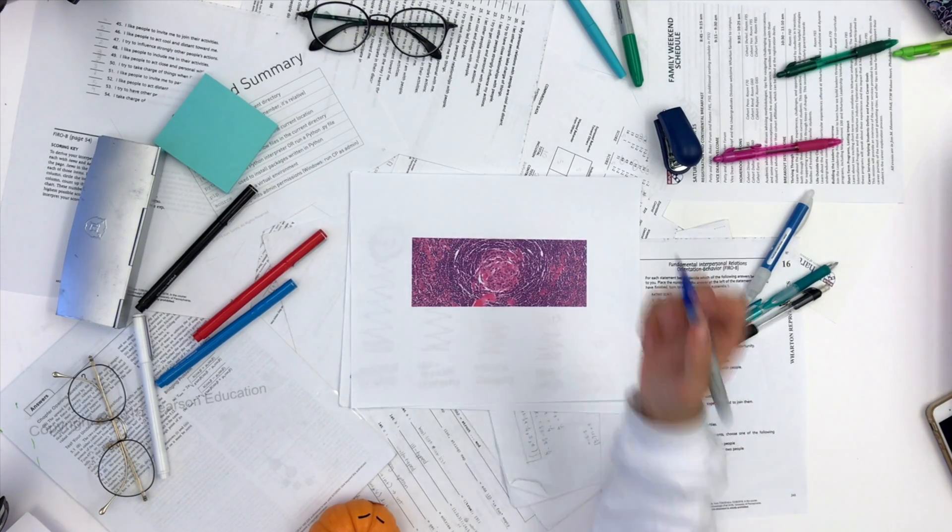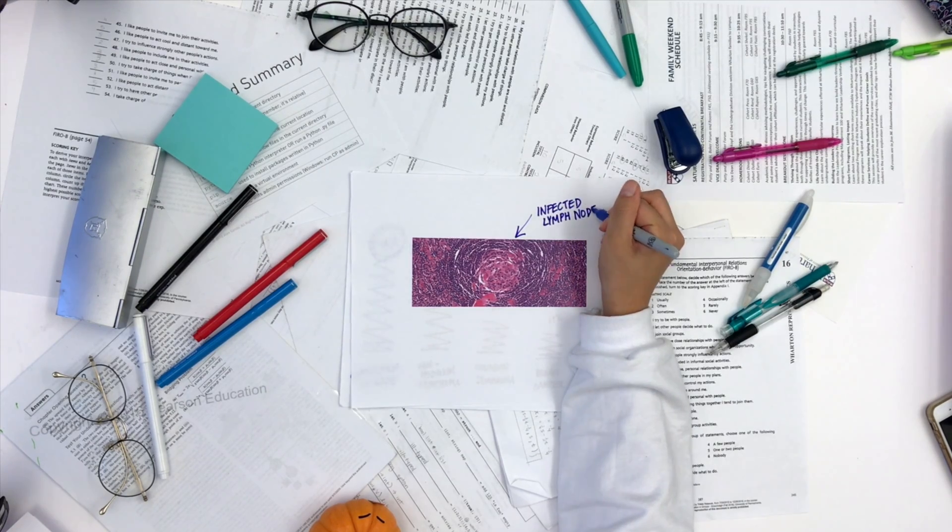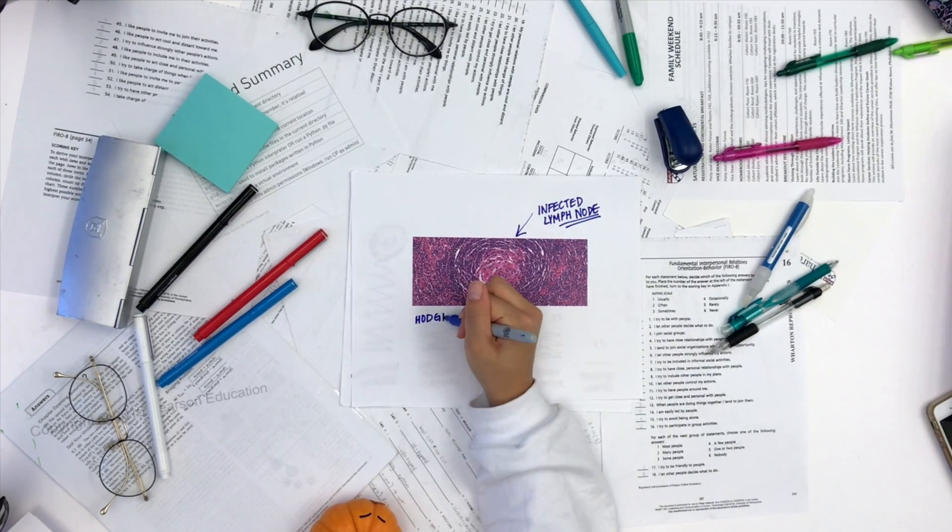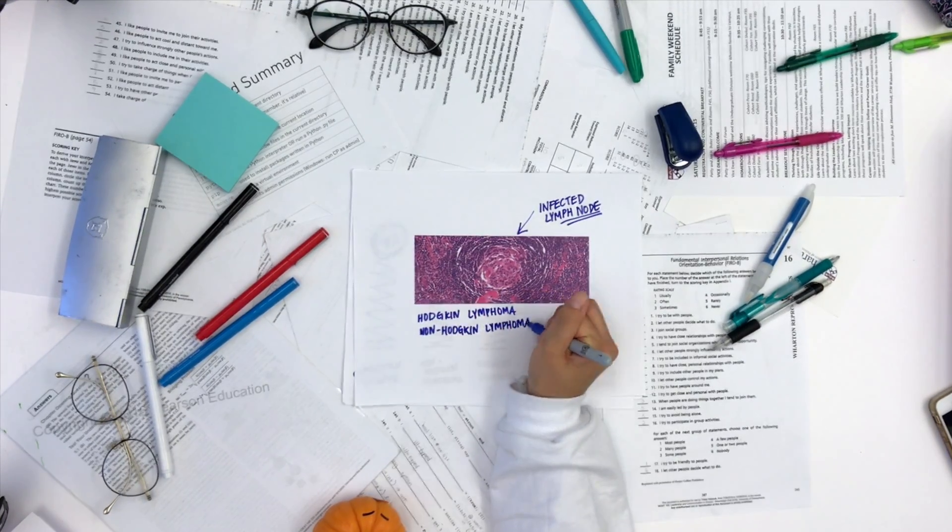Here is a Castleman disease lymph node. Most doctors will look at this lymph node and come up with a few ideas of what this patient has. Lymph nodes like this one are often diagnosed as Hodgkin lymphoma, non-Hodgkin lymphoma, lupus, or rheumatoid arthritis.